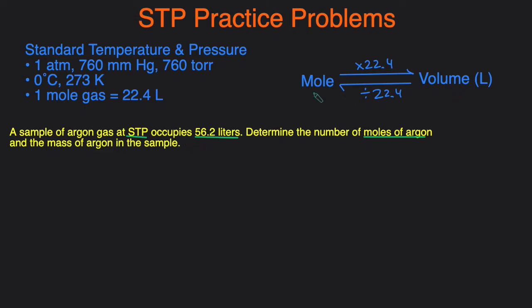So in this last example, we have an argon gas that is at STP and it's taking up 56.2 liters. We have to determine the moles of the argon as well as the mass of the argon. This time we're given the liters and we have to go to moles. So we're going backwards, meaning we're just going to divide by 22.4. So we'll take 56.2 and divide by 22.4, and that will give us 2.51 moles of argon.